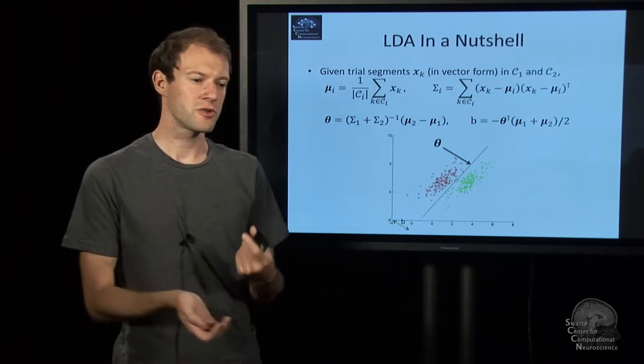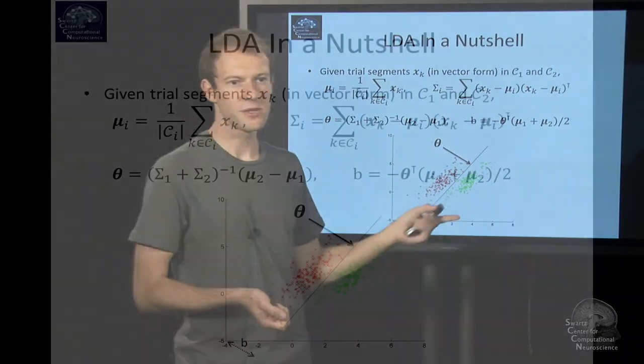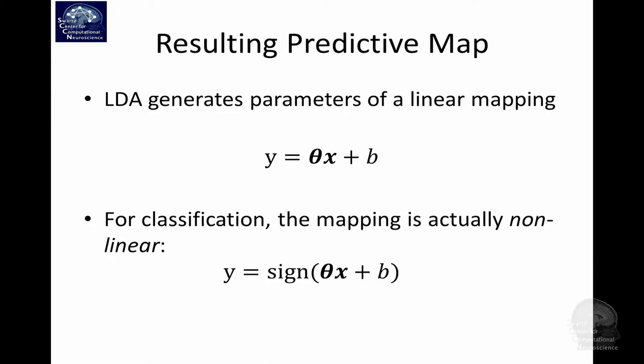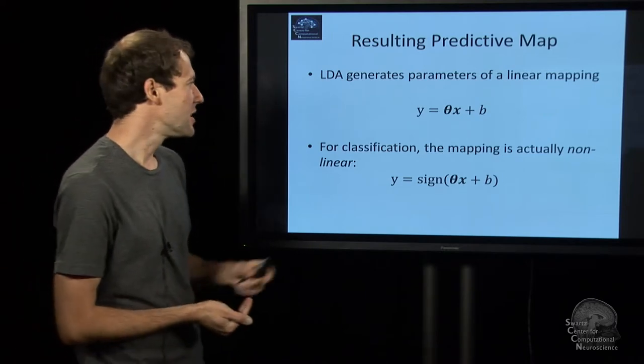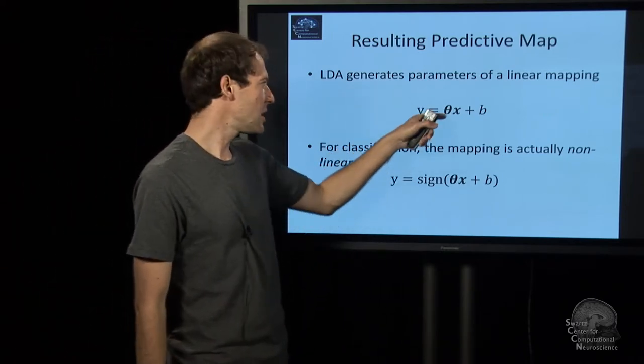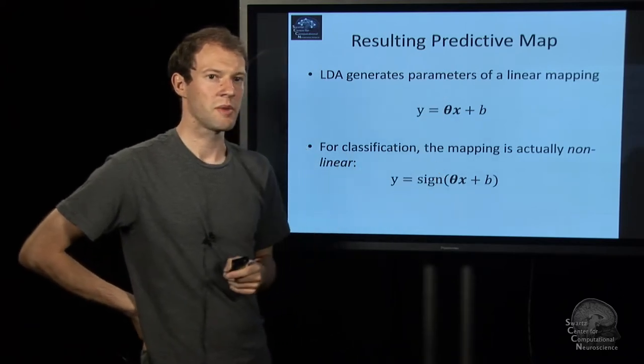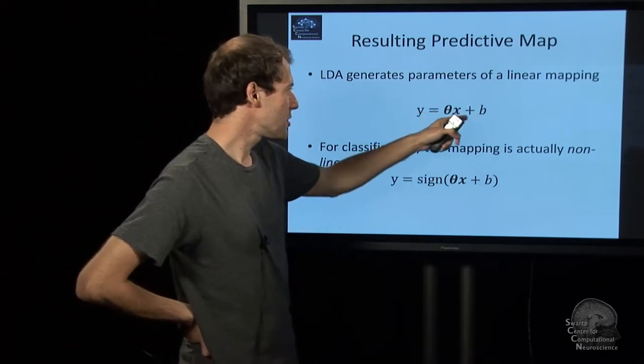That is for the simple case of two classes. With multiple classes there's other methods. It's also under the assumption that there's equally many red and green dots here. There's some balancing numbers in there if you have different prior probabilities for class one versus class two. Once you've learned these parameters from some training data, that gives you parameters theta and b, in some kind of a mapping, a statistical mapping from feature space onto label.